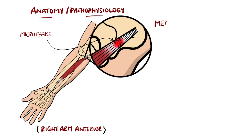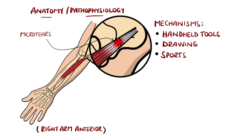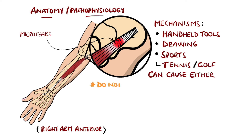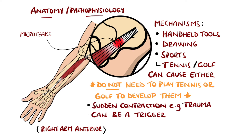Motions like using handheld tools or even drawing are associated with the conditions, and the names are slight misnomers, as playing tennis can give you golfer's elbow and vice versa. Overall, the movements causing the conditions do not necessarily need to be sports related, and in some cases they can be triggered by a sudden contraction, possibly from trauma.